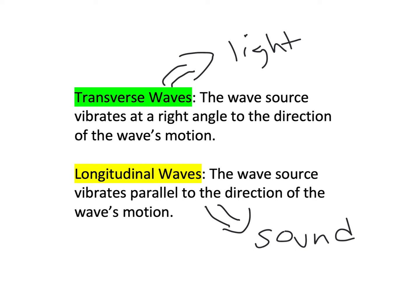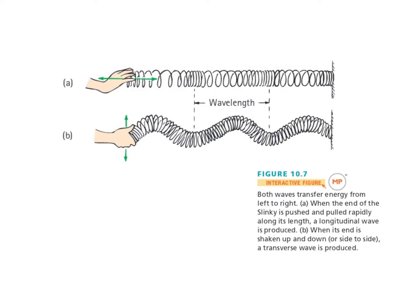In the next slide we're going to look at how these different types of waves are produced. This can most easily be seen with a slinky. Imagine a slinky is fixed to a wall, and a student grabs hold of the other end. If you vibrate the slinky back and forth along the direction of the wave motion — that is, parallel to the line on which the wave is traveling — that's a longitudinal wave. The motion of vibration is parallel to the motion of the wave.